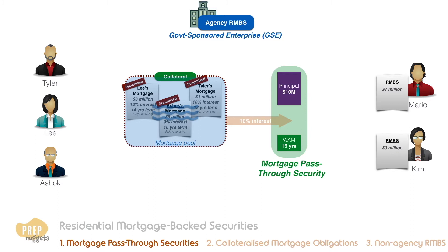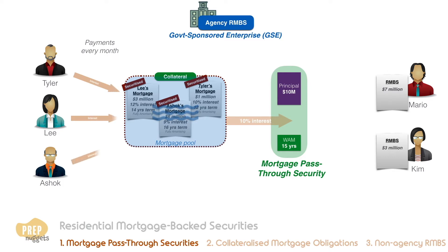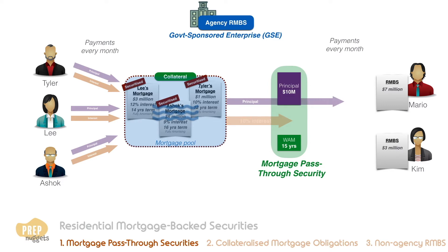So every month, Tyler, Lee and Ashok continue to make their regular scheduled payments for their respective mortgages. Since they are fully amortizing loans, a portion of the payment is interest payment, and the rest is principal payment. The principal goes to repay the principal owed to the investors of the agency RMBS. The principal amount of the RMBS is therefore reduced accordingly.